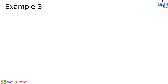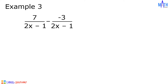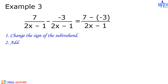Example number 3: 7 over 2x minus 1 minus negative 3 over 2x minus 1. In the numerator we have 7 minus negative 3, and in the denominator we have 2x minus 1. Rules in subtracting expressions: change the sign of the subtrahend and proceed to addition. In 7 minus negative 3, negative 3 is the subtrahend.